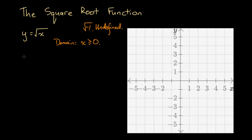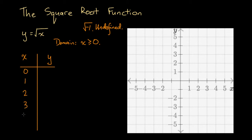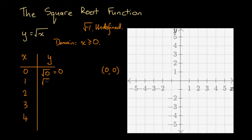Let's drop a table of values — a list of x values and their corresponding y values. We'll choose x equals 0, 1, 2, 3, and 4. At x equals 0, y equals the square root of 0, which is 0 — so our first point is the origin. At x equals 1, y equals the square root of 1. Since 1 times 1 is 1, the square root of 1 is 1, giving us the point (1, 1).